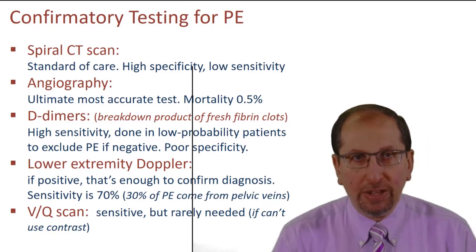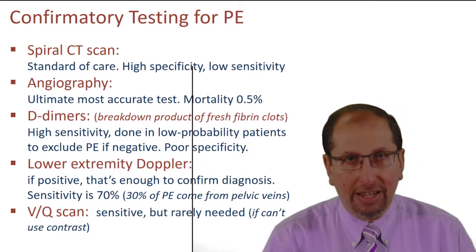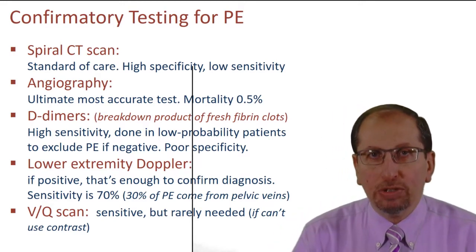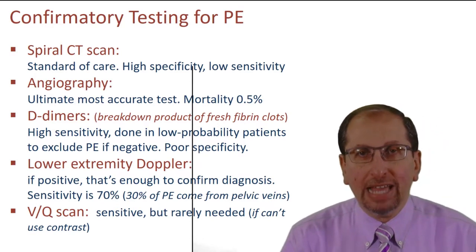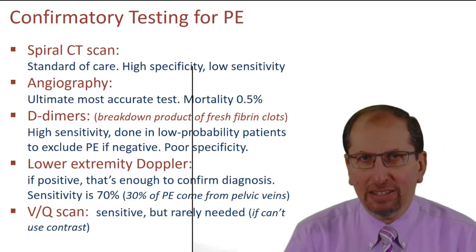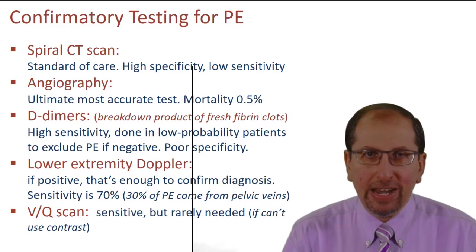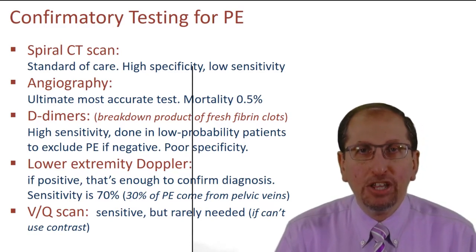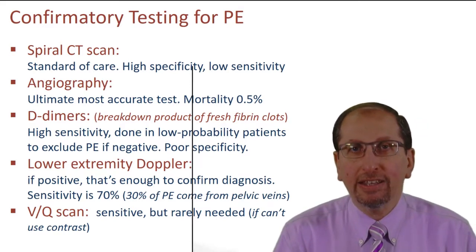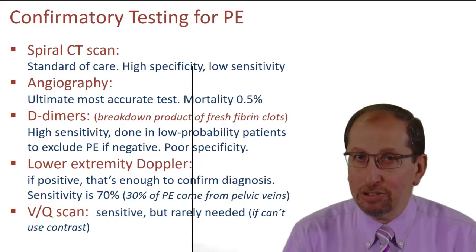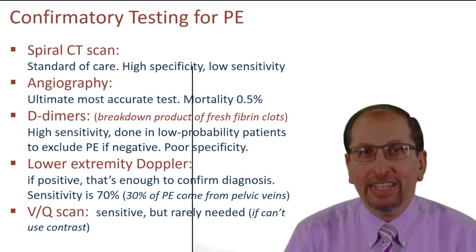Angiography is by far the most accurate test, but we do not do it routinely because the mortality is 0.5%. That might sound low, but when you think of it in terms of yourself, it becomes significant. D-dimers are the breakdown products of fresh fibrin clots.